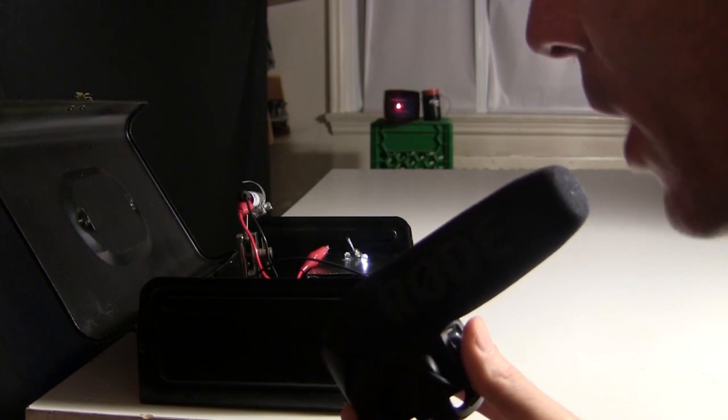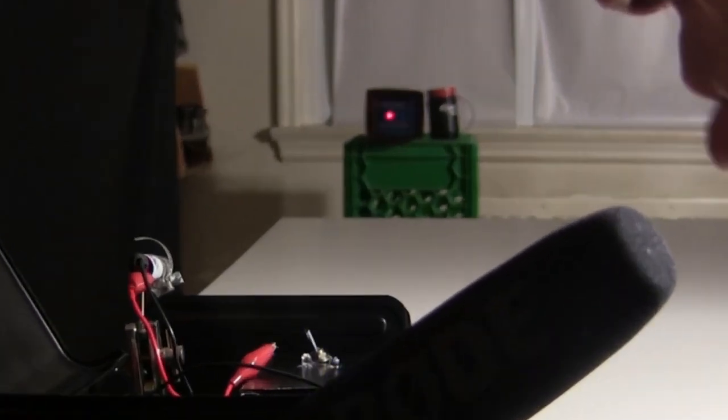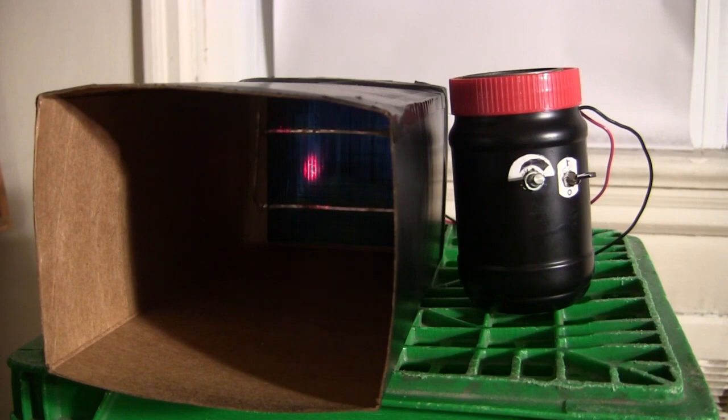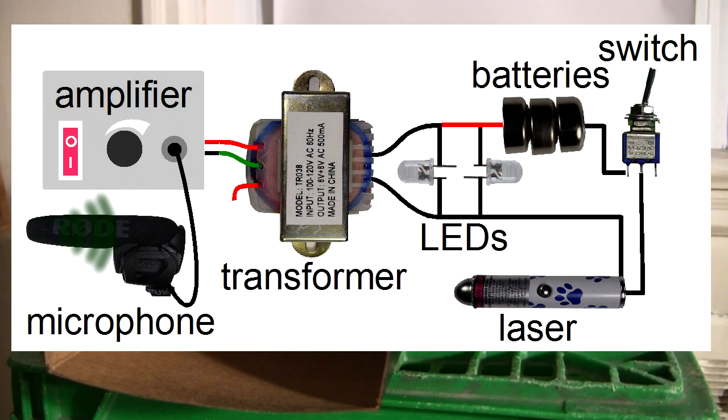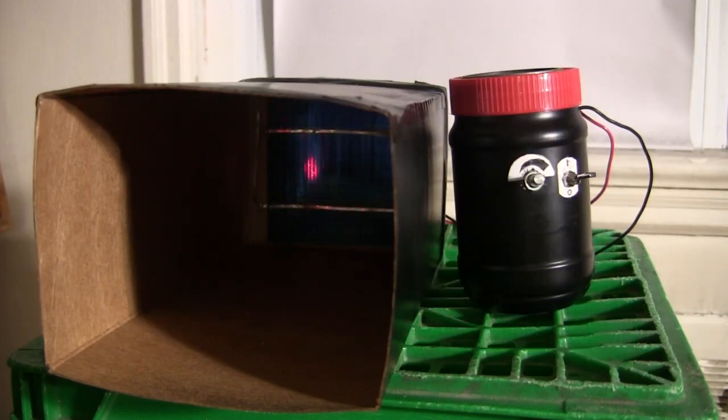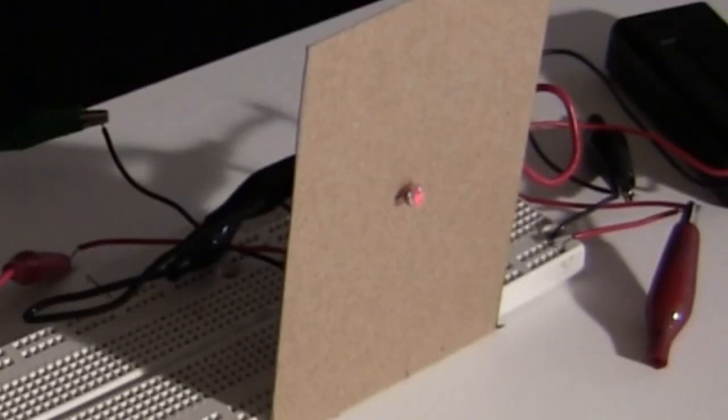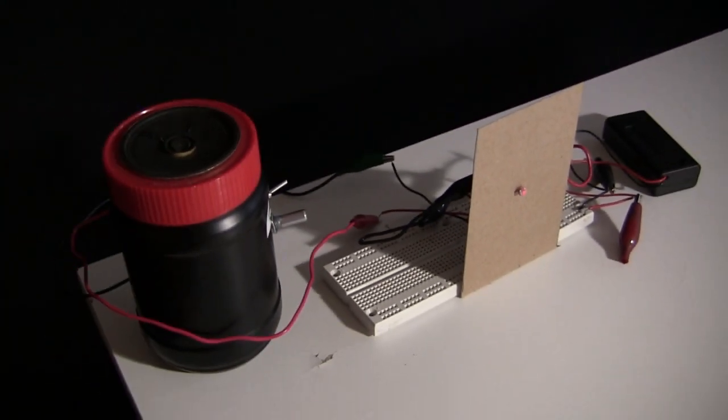You may have seen my series of videos about this laser communicator I made. The laser communicator uses sound, put into a homemade amplifier, followed by a simple transformer circuit, to power a pet toy laser. The light from the laser fluctuates according to the sound. At the other end, I use either a solar cell or a photoresistor as input to another amplifier, which together turn the fluctuating light back into sound.